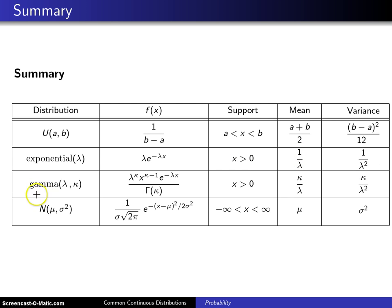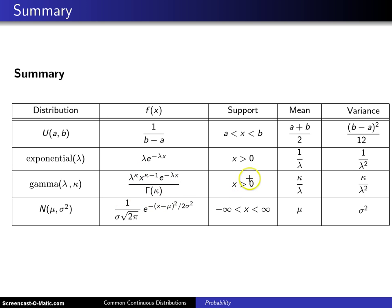The next distribution is the gamma distribution. It is a generalization of the exponential that includes a shape parameter kappa. The probability density function involves the gamma function. The support is again x greater than zero, and its mean and variance are tractable.